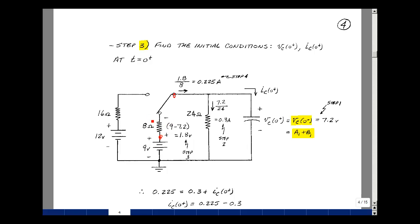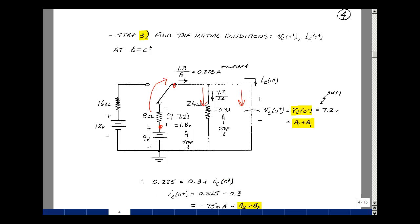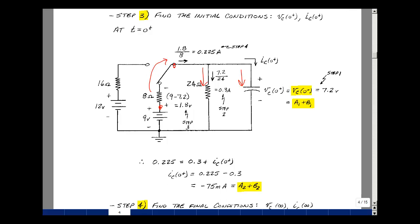So the current that's flowing in here is 1.8 volts divided by 8 ohms, and that current enters a node and has to equal the current that leaves a node. That's my equation on the bottom here. So 0.225 amps is equal to 0.3 plus the current in the capacitor. Again, this is all at t equals 0 plus. So now I can solve for the capacitor current.